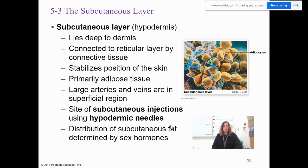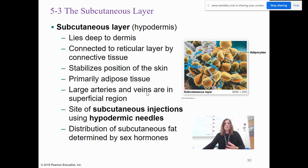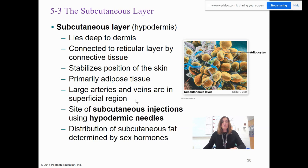The subcutaneous layer, or hypodermis ('sub' meaning underneath), is deeper to the dermis. It is connected to the reticular layer by connective tissue and stabilizes the position of the skin. It is mainly made of adipose tissue — fat tissue — consisting of adipocytes. The larger arteries and veins are found in the superficial region of this layer. The hypodermis is the site of subcutaneous injections using hypodermic needles.